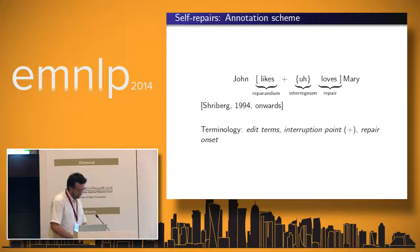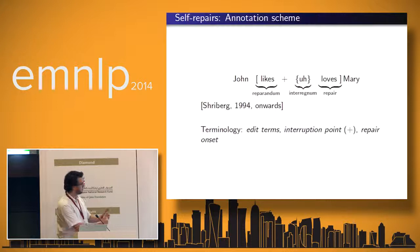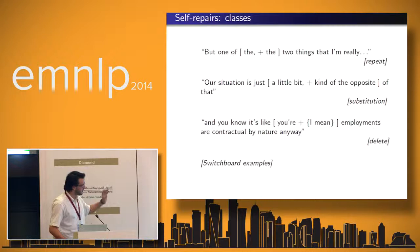We can be helped by this annotation scheme produced by Liz Shriberg's work on corpus analysis of repair, where you have this tripartite structure of a repair with a reparandum phase. In this case, in 'John likes loves Mary', the reparandum is 'likes'. An interregnum bridges — it's a filler or edit term between the reparandum and the repair. Then 'Mary' afterwards continues as a fluent utterance. You can use this annotation scheme on examples to get different types such as repeats, substitutions, and deletes, which have different types of discourse effect and meaning.